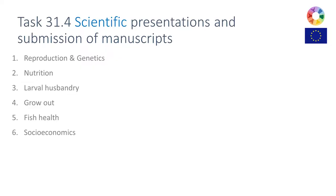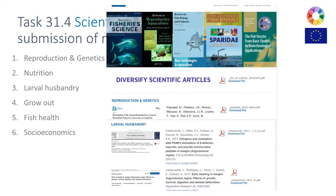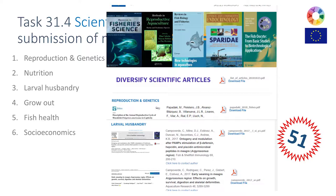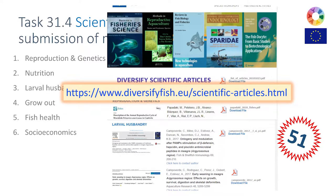Concerning scientific articles and scientific production: the project has been presented by all of you at conferences with oral presentations and posters. We are now busy publishing scientific articles in this last year, and the articles can be found on the web, grouped according to the research area of the project. We have so far 51 articles published, which is not bad — but there are still quite some more in the pipeline. You can find them at DiversifyFish under the scientific articles tab, and if interested, you can download the file or directly contact the author.